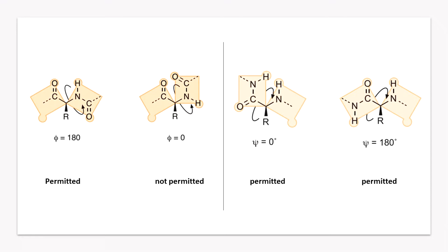But it is not the same for phi. You can see that when phi is 0, two large oxygen atoms from the two successive carboxyl groups face each other, which causes steric hindrance. So, phi equal to 0 is not a favorable conformation.